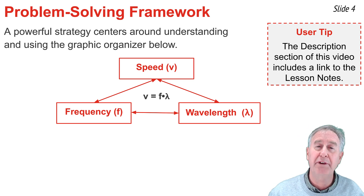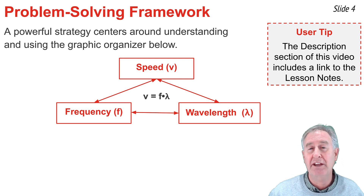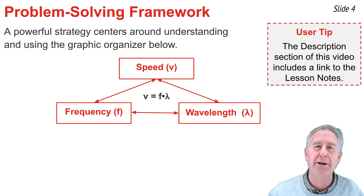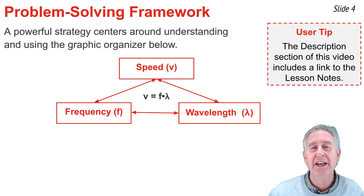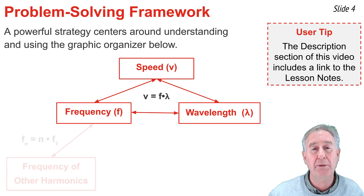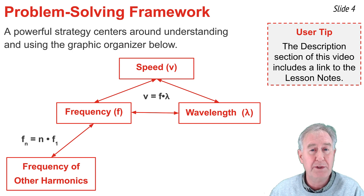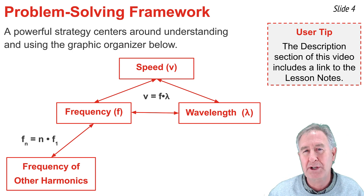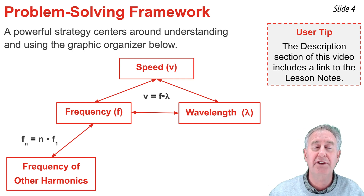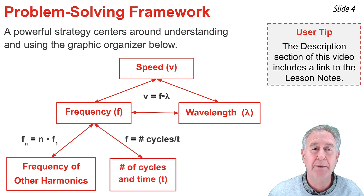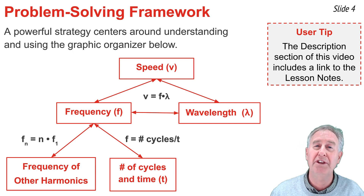When using v = f × λ, you must be consistent. If you know the frequency of the third harmonic, you use v = f₃ × λ₃. Sometimes you know one harmonic's frequency and want to find another's, using fₙ = n × f₁. If you're given cycles per unit time rather than frequency directly, use F = cycles/time to get frequency.